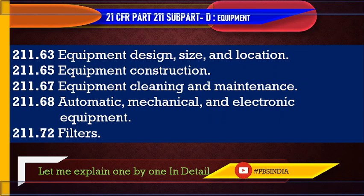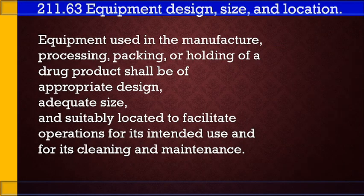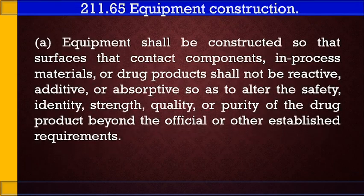So 211.63 — equipment design, size, and location: equipment used in the manufacture, processing, packing, or holding of a drug product shall be of appropriate design, adequate size, and suitably located to facilitate operations for its intended use and for its cleaning and maintenance.